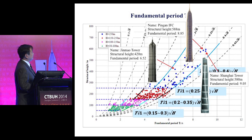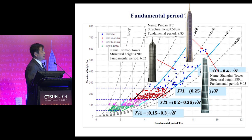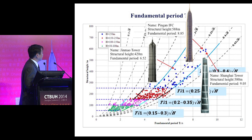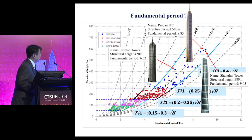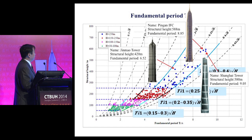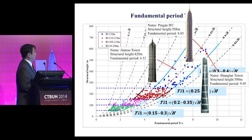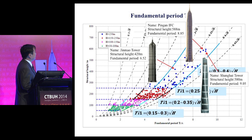For lower structures you can use linear relationships to describe the data, but if you look at the higher ones, linear relationships cannot describe the data. So we establish lower and upper bounds for different heights. Especially for buildings over 250 meters, we give 0.3 to 0.4 times the square root of H, where H is the structural height in meters.